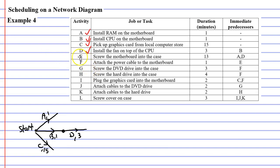Moving on to Activity E — we're going to screw the motherboard into the case. We can't do that until Activities A and D are complete. So we need to install the RAM and also put the fan on top of the CPU before we screw the motherboard into the case. We need to make sure that Activities A and D are connected to the same vertex, and then Activity E comes out from that vertex.